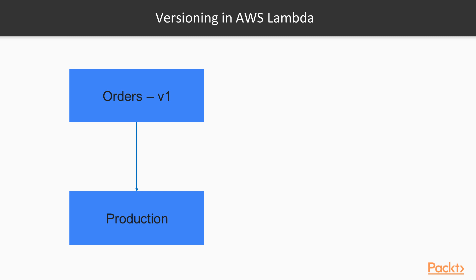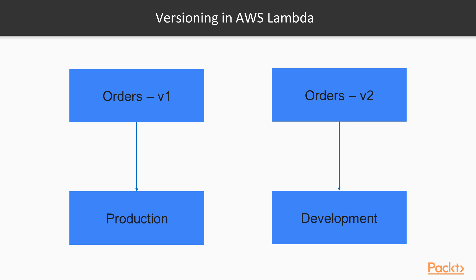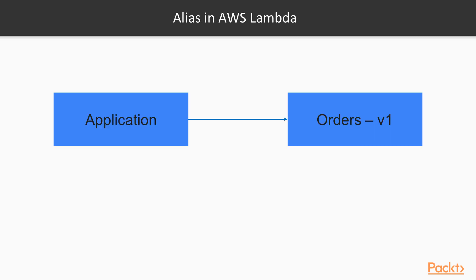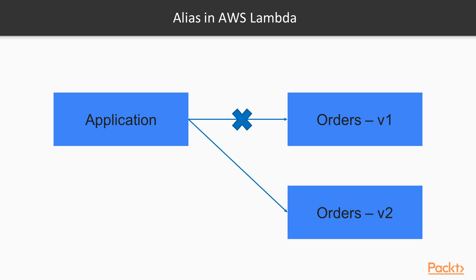Let's look at versioning with an example. Say you have an orders function — this is currently version one, which you can deploy to your production area. You could have the same function, orders version two, deployed to your development area. Now if your application is pointing to orders version one, and you create orders version two, you'd make your application point to orders version two and not version one.